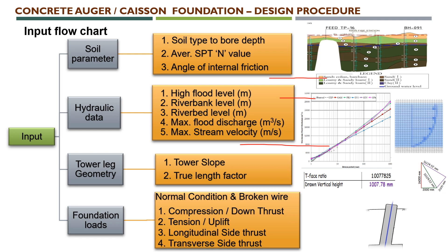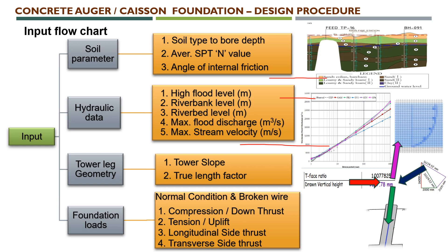The third category of input is tower leg geometry, which includes the tower slope and true length factors. The final one is the foundation load, which is common to pad and chimney type foundation design. We need normal conditions and broken wire conditions with these four types of loads: compression which is down thrust, tension which is uplift, longitudinal side thrust, and transverse side thrust. These are the four major foundation loads required from the structure.